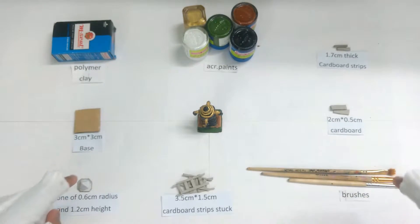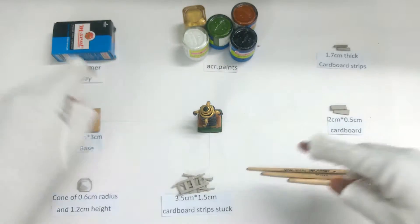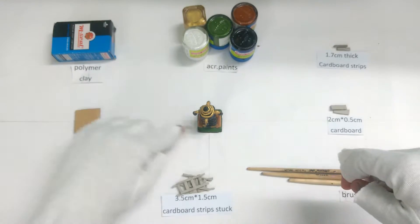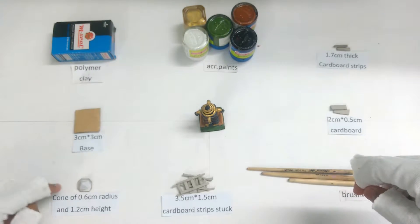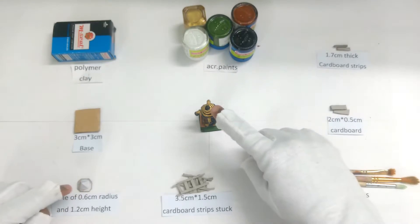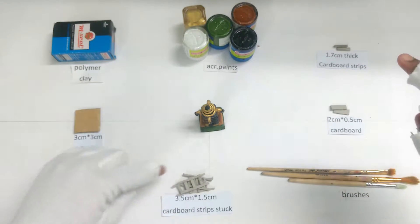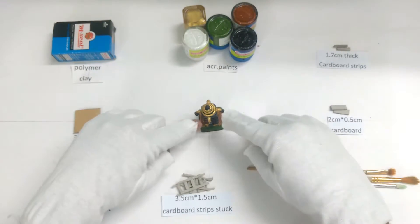First you need polymer clay as usual, and then we need a three centimeter by three centimeter base and a cone that's the top of the hidden Tesla. Dimensions are given. Then you need these ladder shaped objects, dimensions are given on the screen, and they are the four sides of the hidden Tesla.